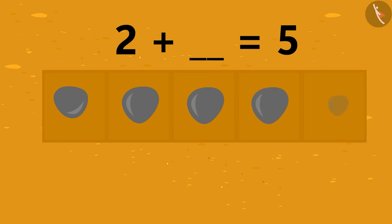1, 2, 3. See Krabby, we kept stones in 3 more frames and now all the frames have stones. This means that if we add 3 to 2, it equals 5.